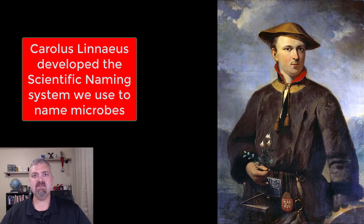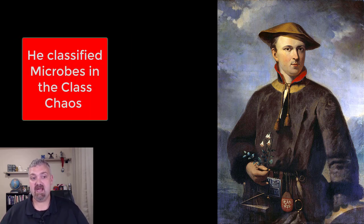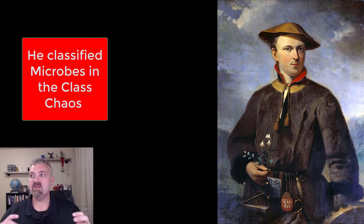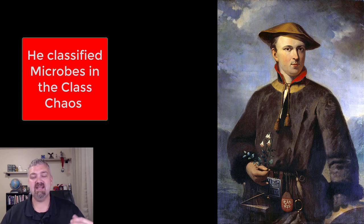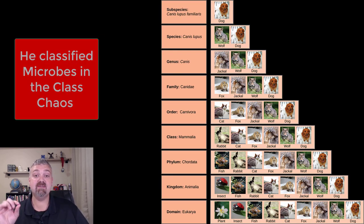Somewhere in the 1730s, around 1735, he actually came up with the scientific naming system that we use to name microbes. One thing I find kind of interesting is he never actually named a microbe. He said: 'They're too small, they're too confused, no one will ever know anything exact about them,' so he put them in what he called the class chaos. I find it interesting that he's credited with naming microbes but didn't actually name them.